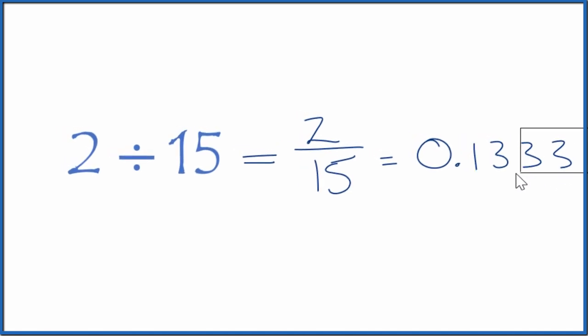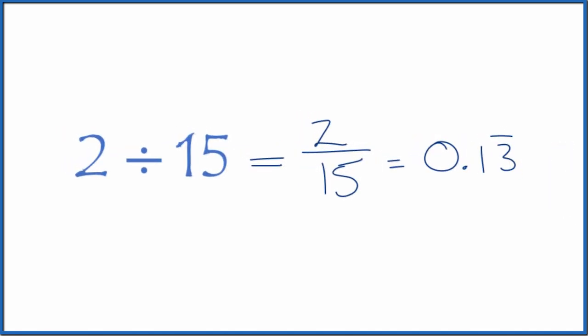So let's get rid of these. Then we'll put a bar over the 3 to show that it repeats. So 2 divided by 15, that's equal to the fraction 2 fifteenths or the decimal 0.13 with the 3 repeating.